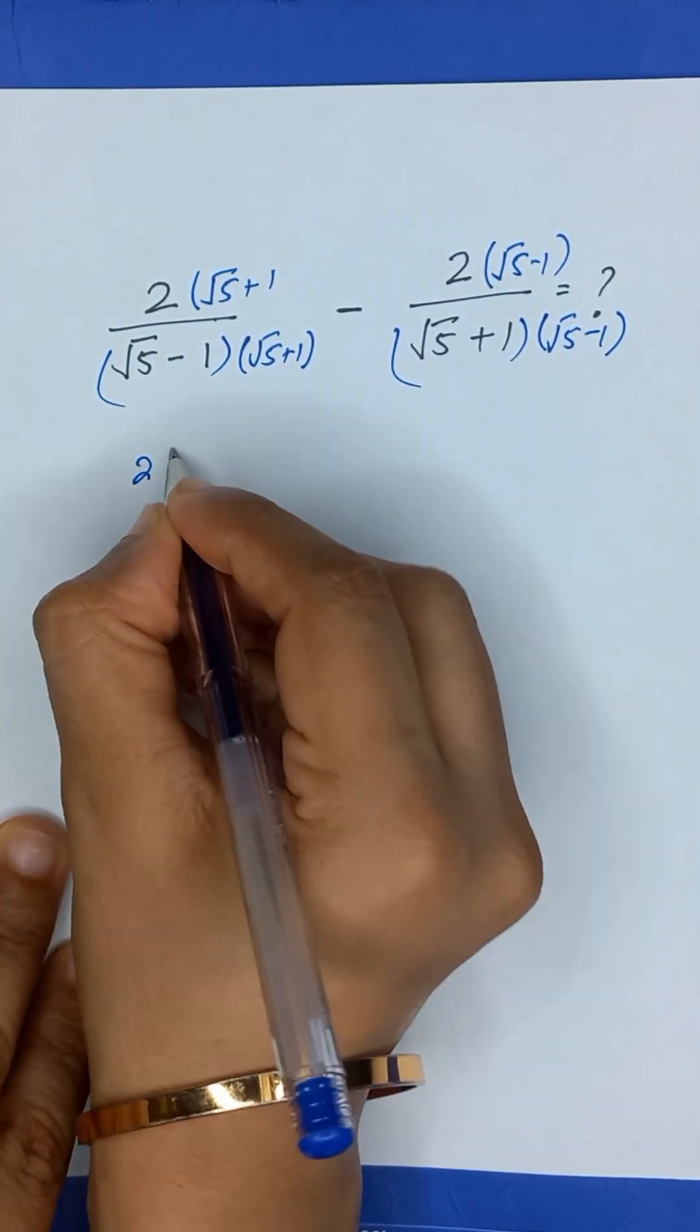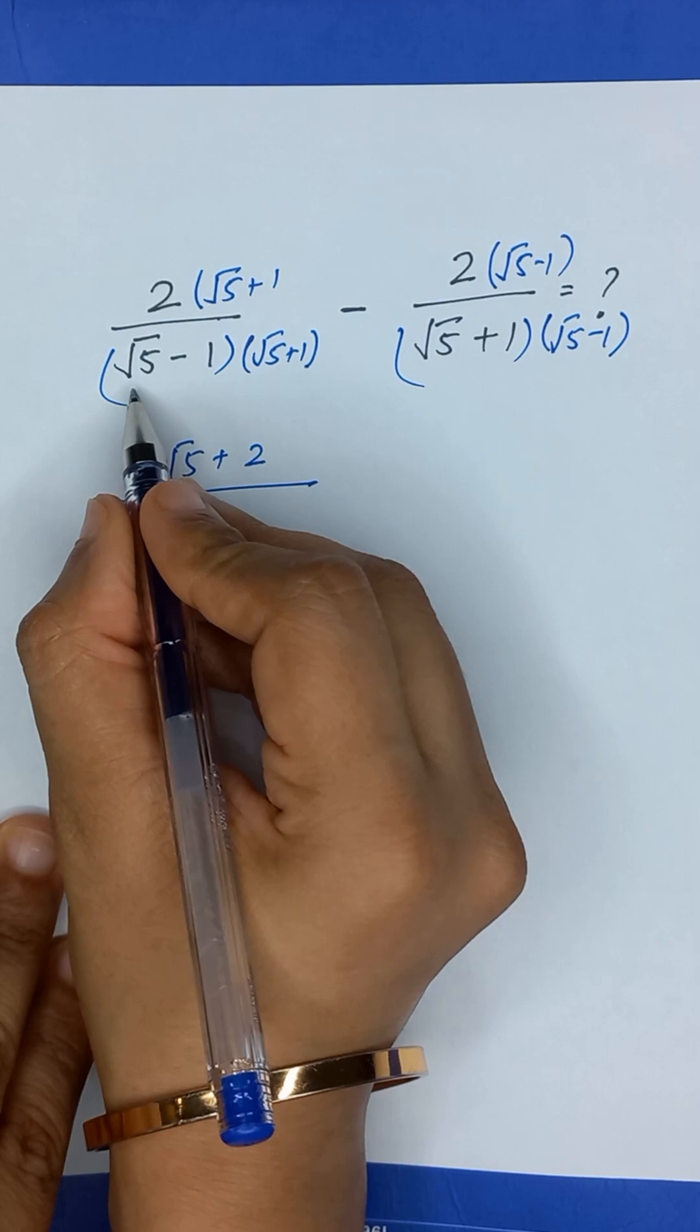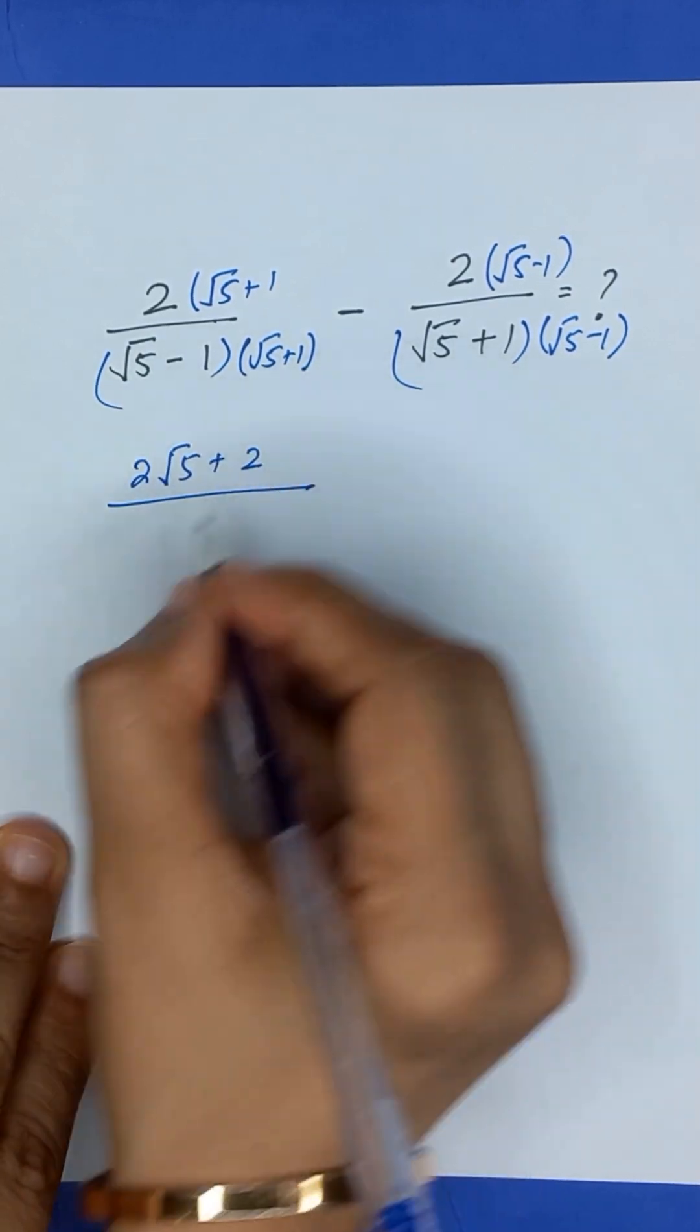So it will become 2 times square root of 5 plus 2, divided by—it is in the form of a minus b times a plus b, which is equal to a square minus b square.